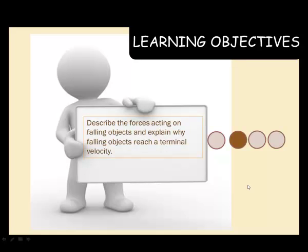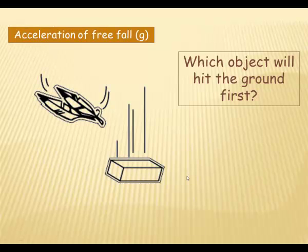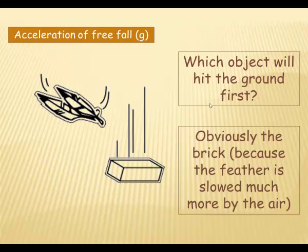Let me ask you a classic question. Feathers, brick dropped from the same height, which object will hit the ground first? Pretty obvious really, obviously the brick. And the reason for that is the feathers are slowed much more by the air, greater surface area in proportion to their weight, and so they are slowed by the air whereas the brick isn't.